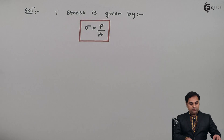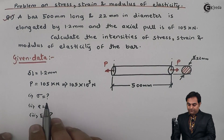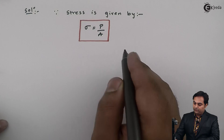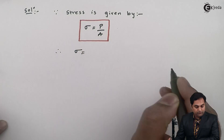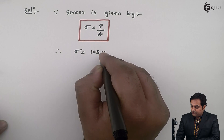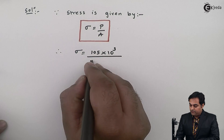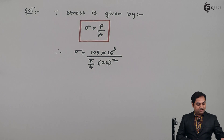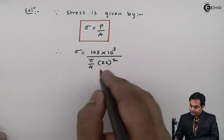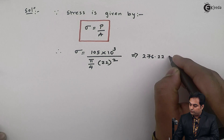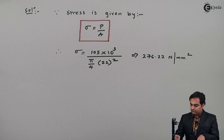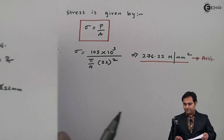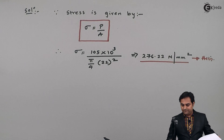P is given as 105 into 10 raised to 3 Newton, and the area can be calculated from the diameter of 22 mm. So stress Sigma equals P divided by area, which is pi by 4 into 22 squared. The first answer for stress comes out to be 276.22 Newton per mm square.